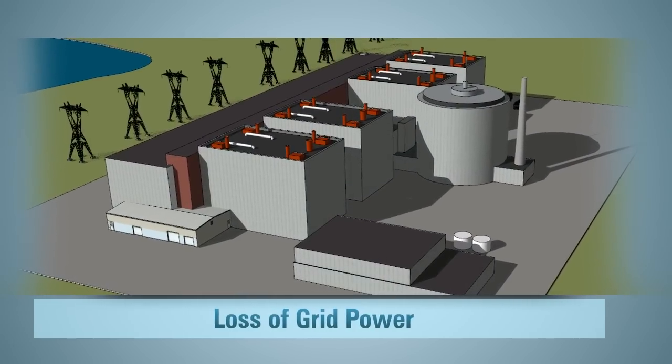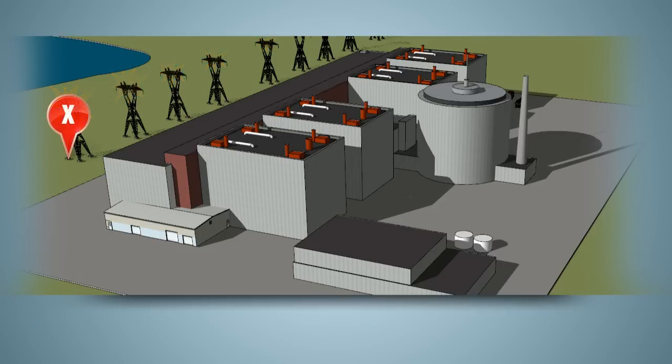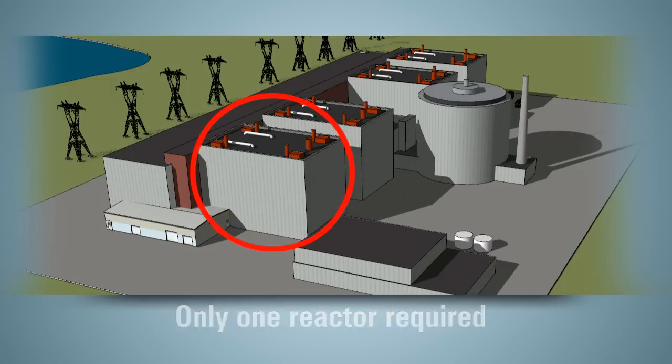When off-site or grid power is lost, the station itself produces enough electricity to maintain all of its systems. At a multi-unit nuclear power plant, one reactor can provide enough power to maintain all of the other units.